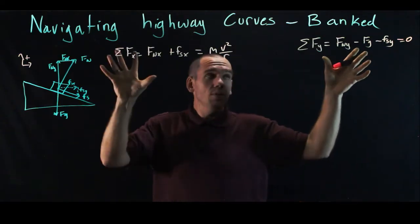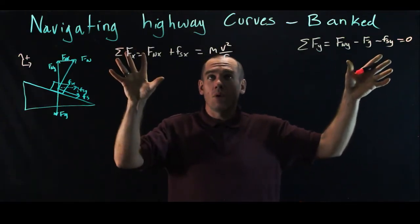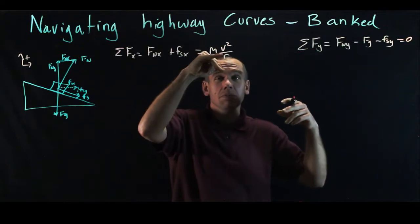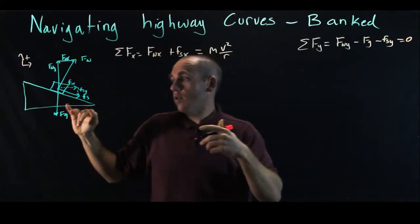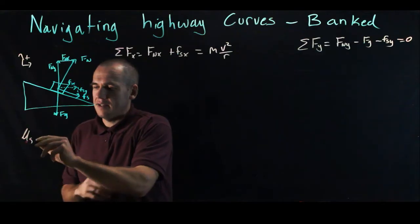So now I have these two equations, net force in X, net force in Y, and what I'm trying to do is figure out the maximum speed V that I can take this corner. And so my coefficient of friction is mu S.